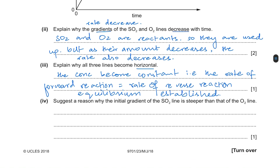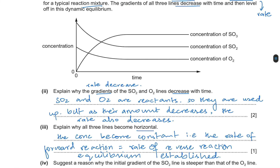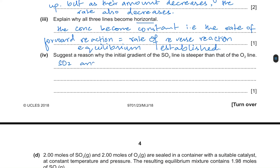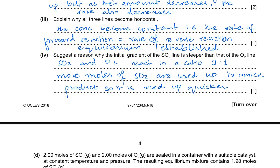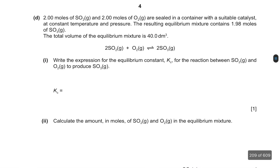The next part asks why the initial gradient of the SO2 line is steeper than that of the O2 line. SO2 and O2 react in a 2:1 ratio, so more moles of SO2 are used up to make SO3. Because SO2 is required in greater amounts, it is used up more quickly, giving it a steeper gradient compared to O2.